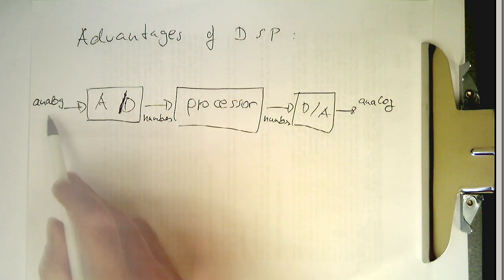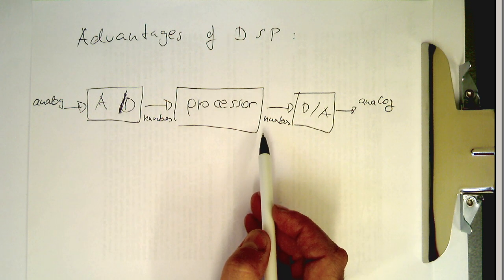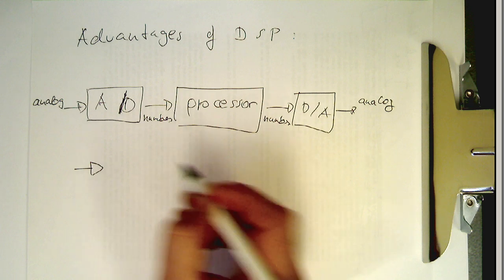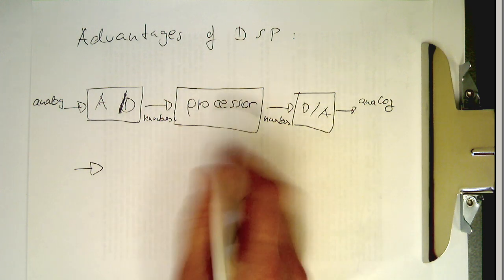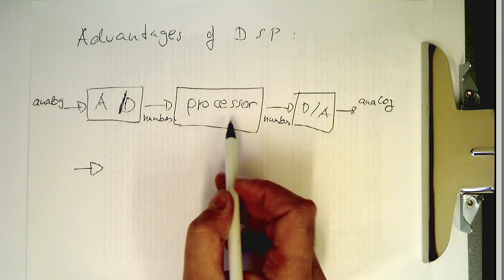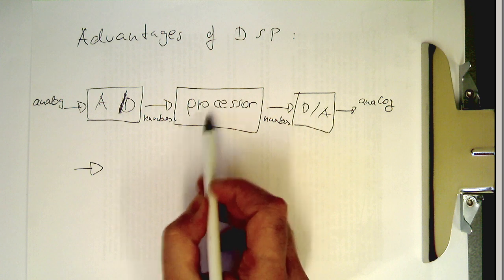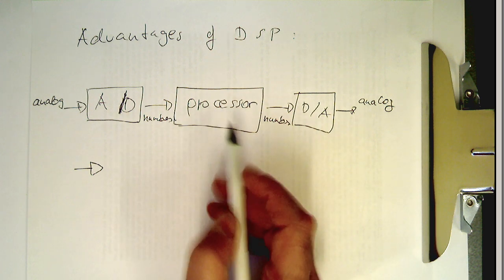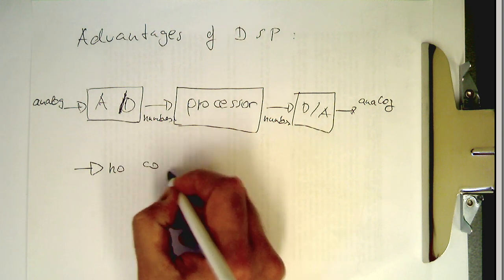So we've got analog here, analog here, and numbers here and numbers here. What's the advantage? One really important advantage is that the number crunching happening here is always the same, so it will never change. Obviously if there's a bug in the processing it does, but otherwise it's stable. This means we have no component tolerances.